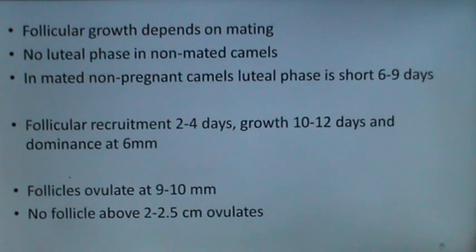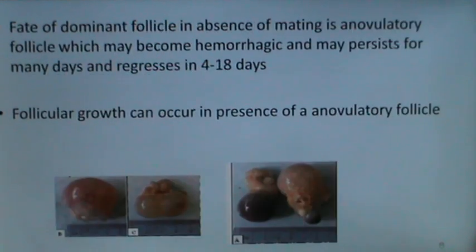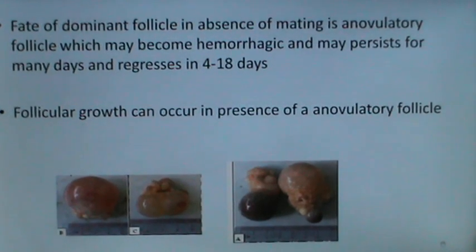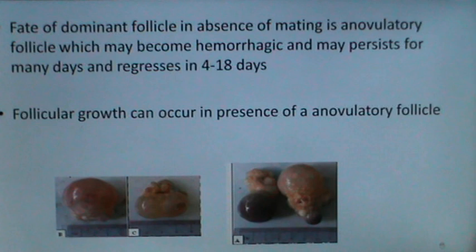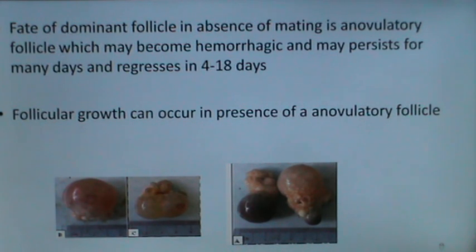A specialty of the camel is that follicles ovulate at 9 to 10 mm, and no follicle above 2 to 2.5 cm ovulates. Ovulation is induced and does not occur in the absence of mating. The fate of the dominant follicle in the absence of mating is an anovulatory follicle, which may become hemorrhagic, persist for many days, and regress in 4 to 18 days. Follicular growth can occur in the presence of an anovulatory follicle — again very peculiar in the female camel.